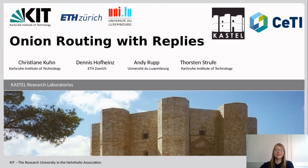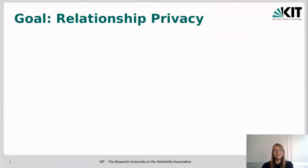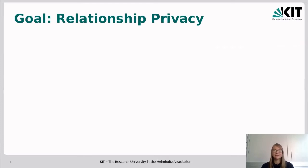Let us first start by thinking why we need onion routing in the first place. One goal of onion routing is to provide relationship privacy — to hide who is communicating with whom from the adversary. And this is a very important goal. Just imagine Alice contacting a web server that only offers information about a specific disease like cancer or depression. Then it is highly likely that Alice suffers from this disease, an information that we much rather keep hidden from the adversary.